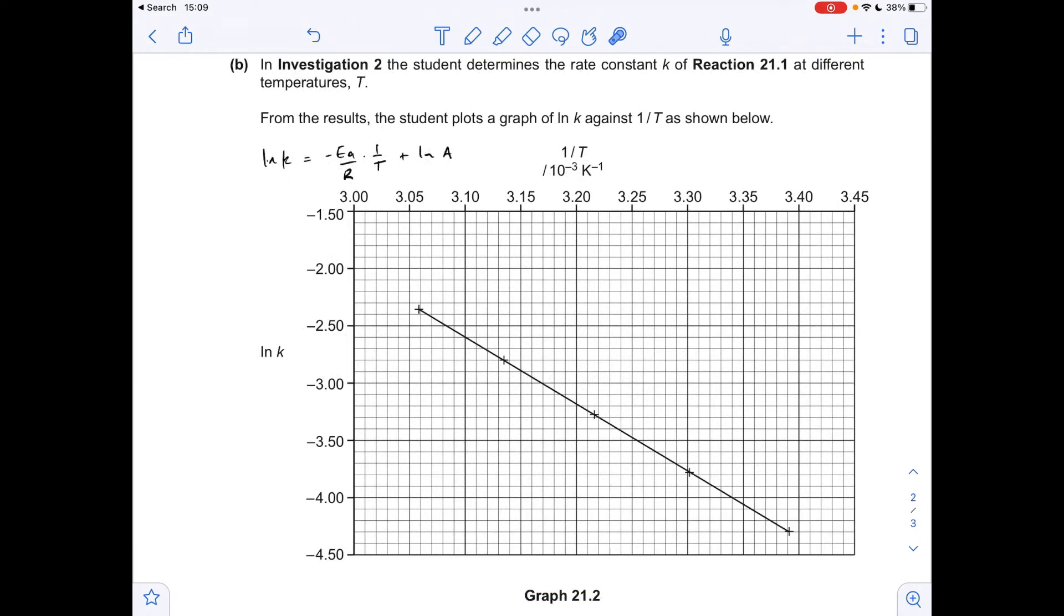So moving on to part B, we've got an Arrhenius question to deal with. So the Arrhenius equation in its ln form, I'll write it out like that, because you can clearly see the Y, the M, the X, and the C.